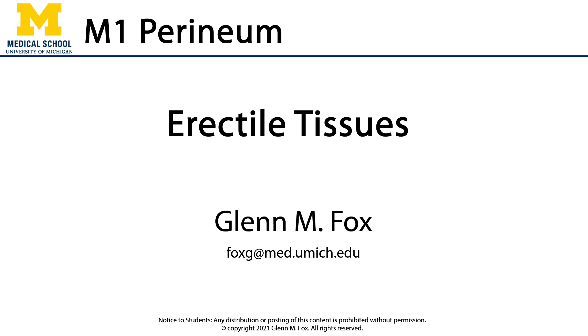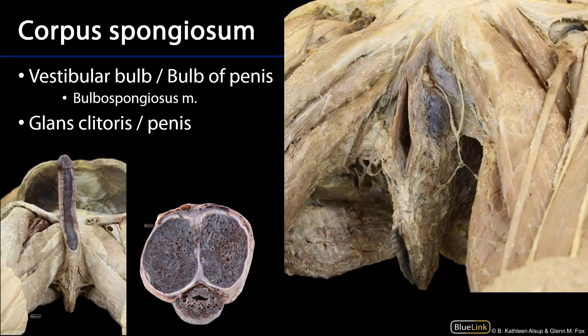Let's talk about the erectile tissues. Erectile tissues include derivatives of the corpus spongiosum and derivatives of the corpus cavernosum.